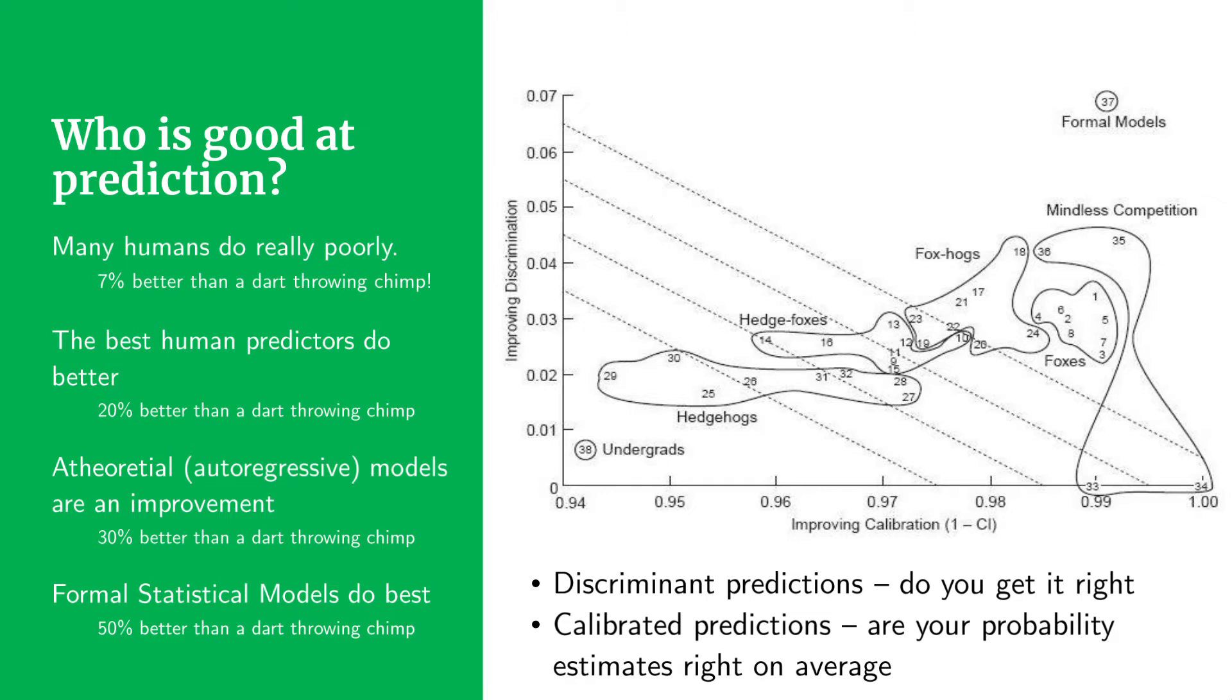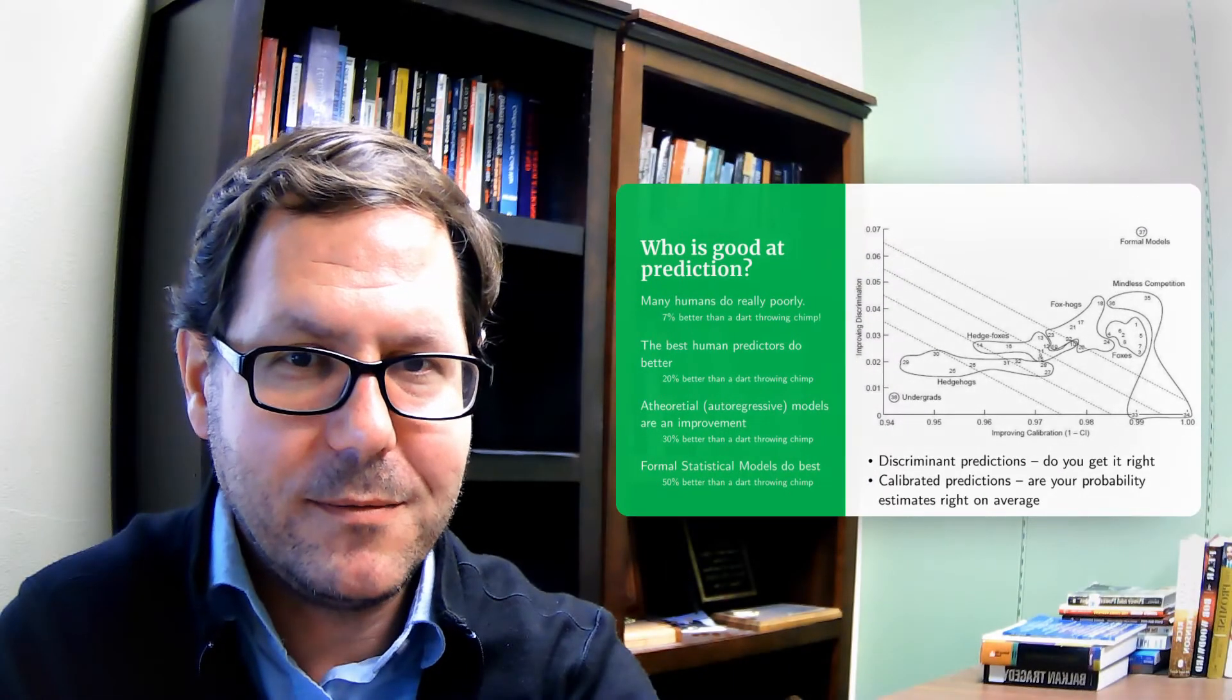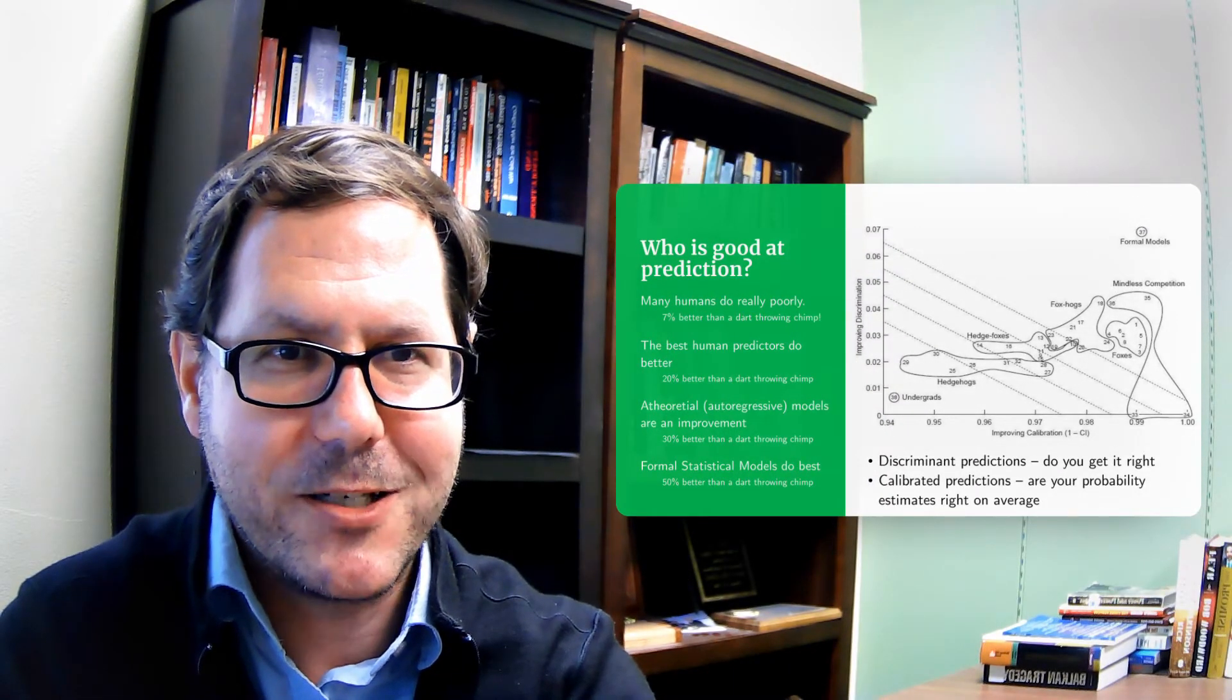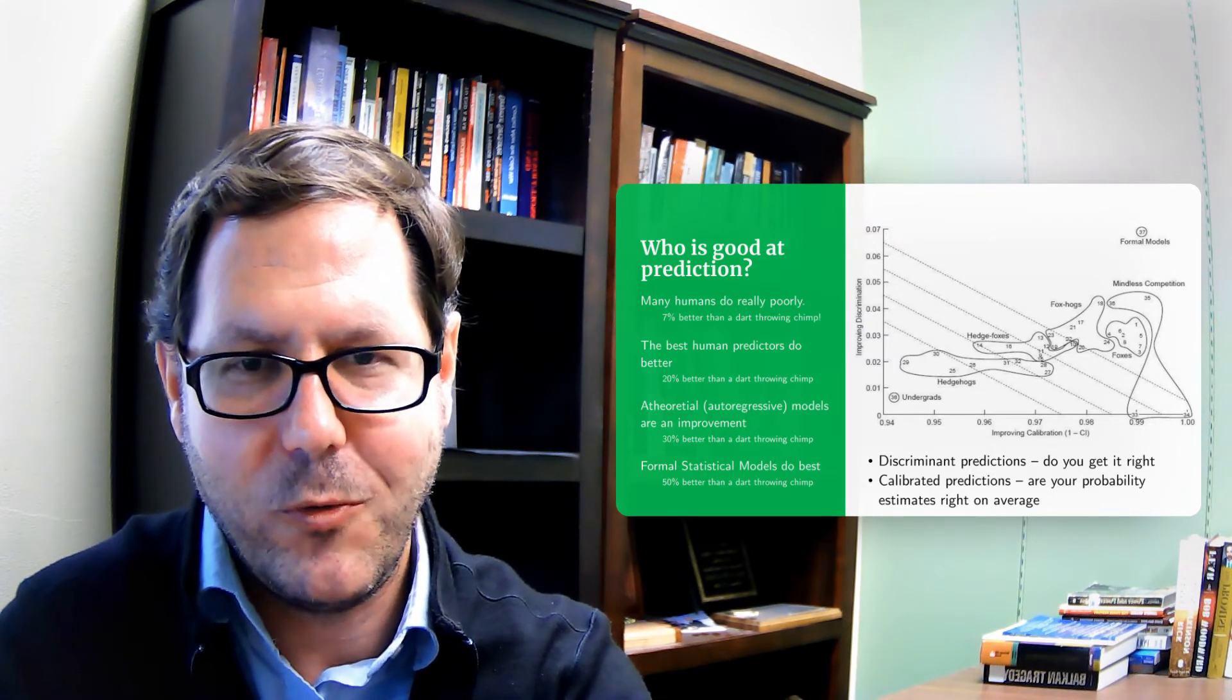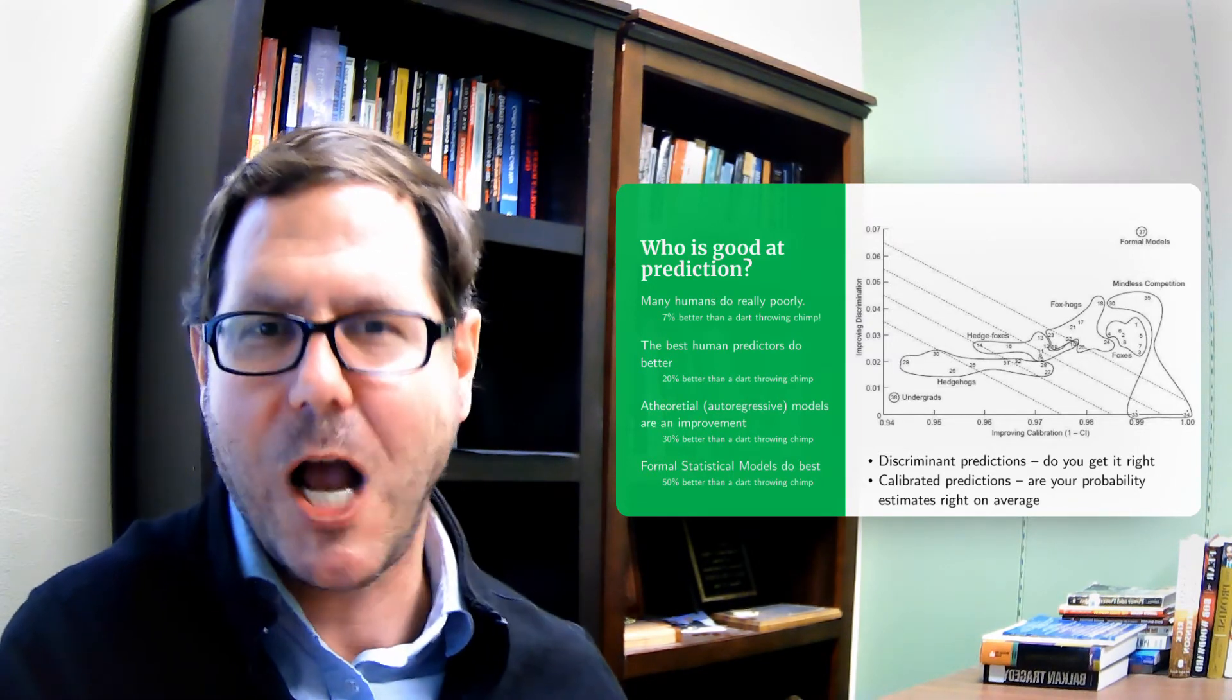But when you look at mindless competition, whether it's just taking trends and mapping them forward, we might call atheoretical models, tomorrow's going to look exactly like today, or whether it's some sort of formal statistical model where I've added in multiple variables and done a multiple regression and got a forecast that way, those tend to do better than human beings and in some cases significantly better than human beings at making forecasts, which is a little disconcerting and suggests that human beings really struggle to do a good job thinking about probabilities, incorporating all the information and making sound forecasts and judgments.